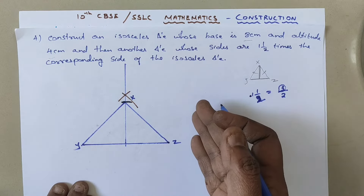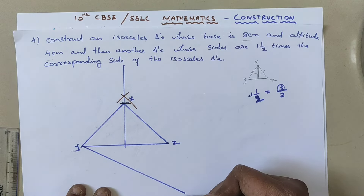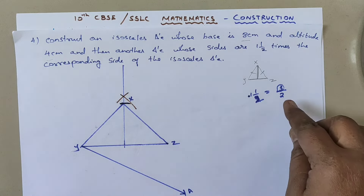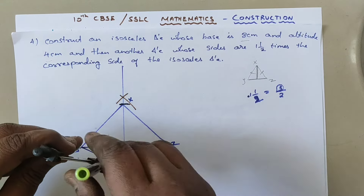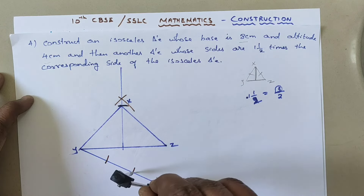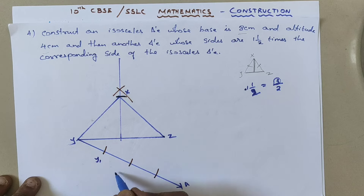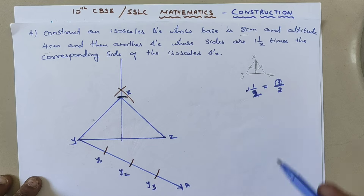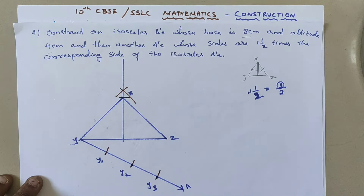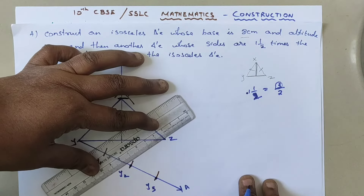Draw a ray of suitable measurement and label the starting point A. Divide this ray into 3 equal parts — because 3 is the bigger number in the ratio 3/2. Mark the points as Y1, Y2, and Y3. Since the ratio is 3 by 2, mark one point at Y3 and another at Y2. Because the second triangle is bigger, it will come outside, so join Y2 to Z.